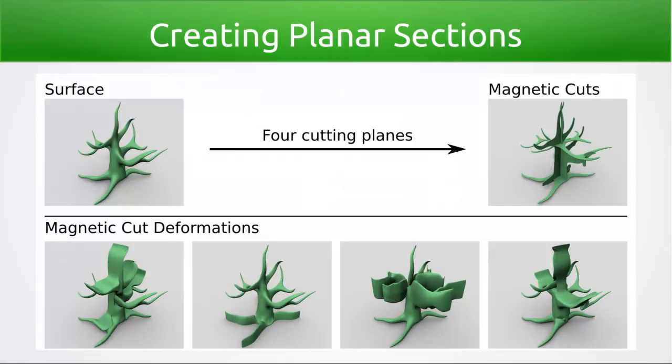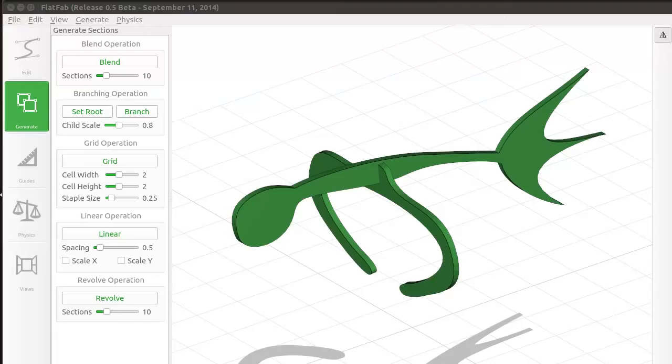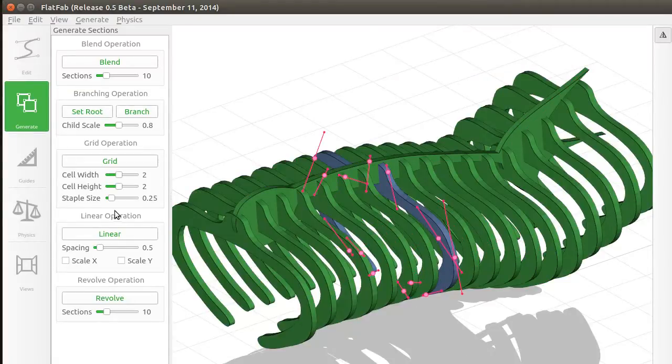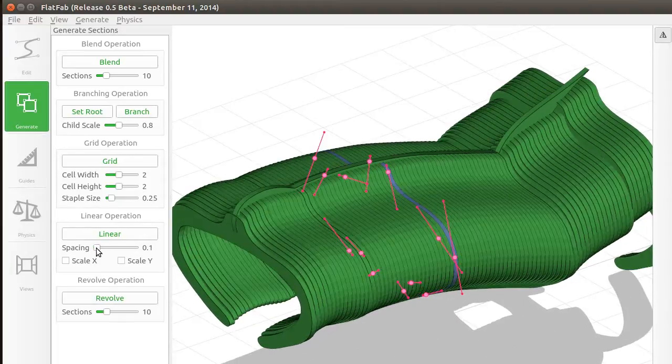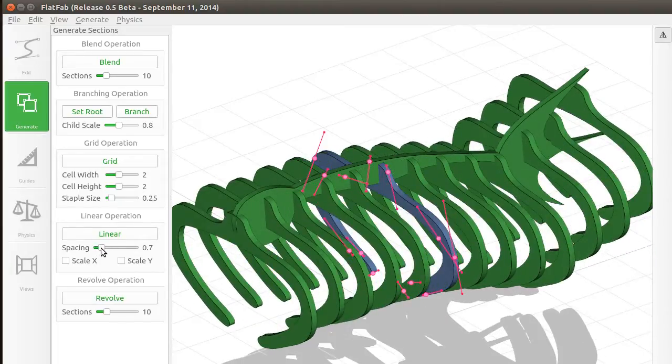Our system includes a set of procedural modeling operations with parameters that can be adjusted in real time. These operations further address the need for shape regularity and make creation easier and more fun. The linear operation shown here creates regularly spaced planar sections.